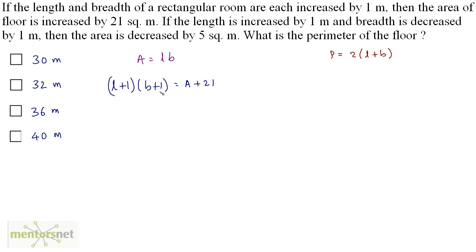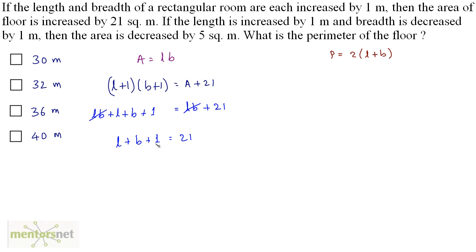Area is L times B, so we have LB plus 21 on the right hand side. On the left hand side, expanding: LB plus L plus B plus 1. This LB and that LB get cancelled out. What we have is L plus B plus 1 equals 21, and therefore L plus B equals 20. So twice of L plus B is 2 times 20, and the perimeter is 40 meters.